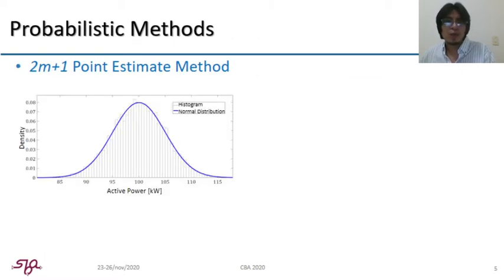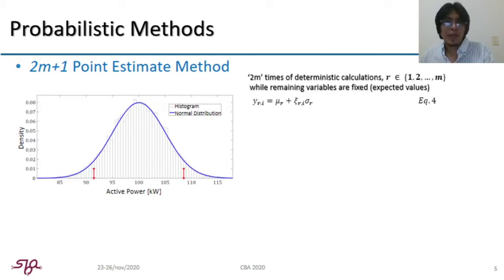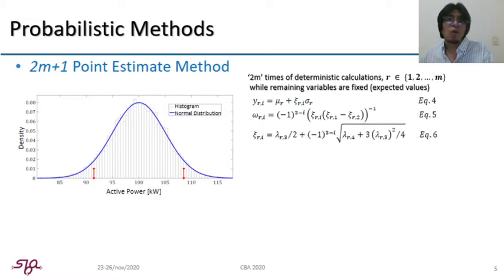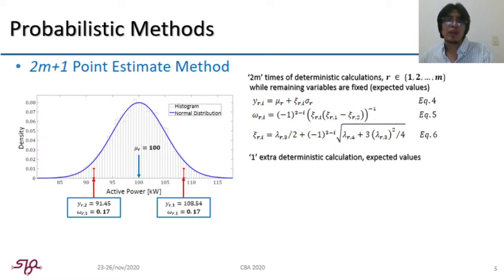Now, let's describe how the 2m plus 1 point estimate method works. This technique only performs 2m plus 1 times a deterministic power flow, where m represents a total number of uncertain variables. For instance, the figure shows a probability density function of active power, where two concentrations are selected based on location using equation 4 and weight using equation 5. This technique uses skewness and kurtosis information of the uncertain variable to determine its standard location by equation 6.